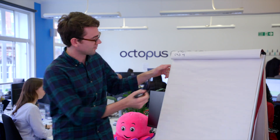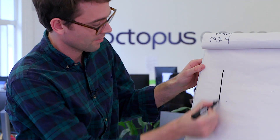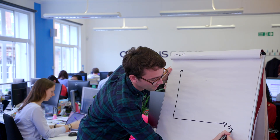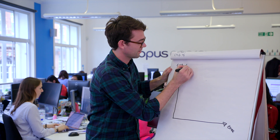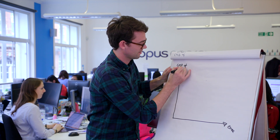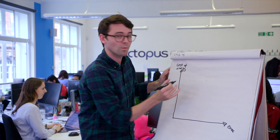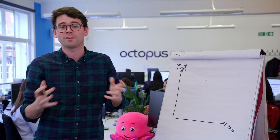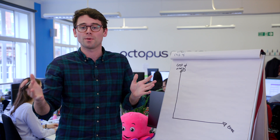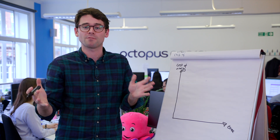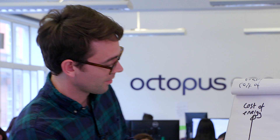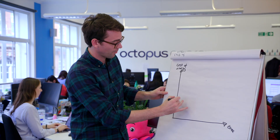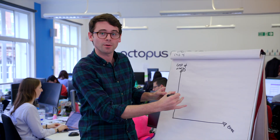So let's start with the 12-month fixed. Here's a graph of time versus the cost of energy. When we set our 12-month fixed prices, we set them for 12 months. So we're fixing the rate that you pay for your energy over that whole period of the contract. That means we have to buy your energy in advance and we have to buy it on the wholesale market.